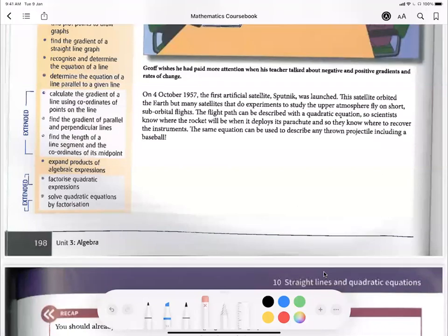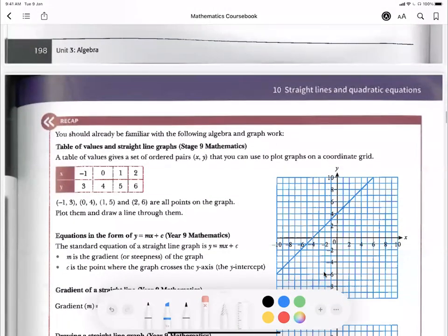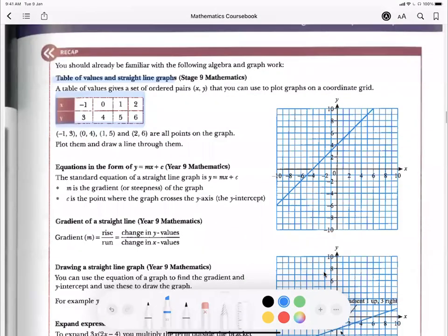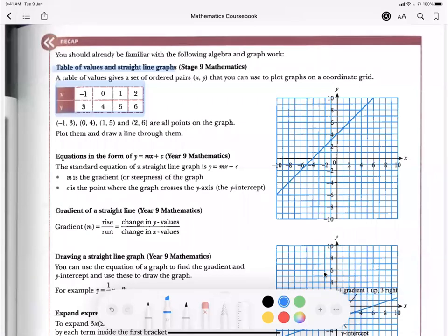So let's look at the things that you're supposed to know before we start. Table values and straight line graphs that you have learned before in your year 9 or stage 9 mathematics, where we know how to plot a table. And then we use the equation given to us or immediately just plot whatever that's been given to us.